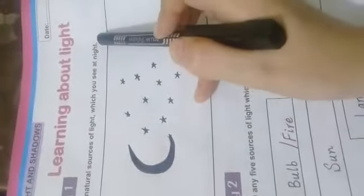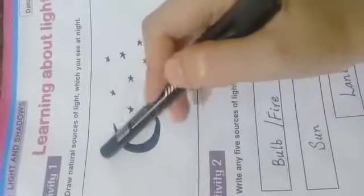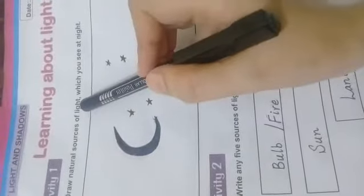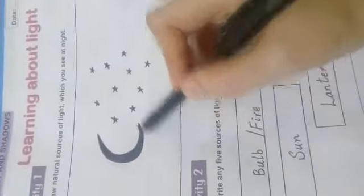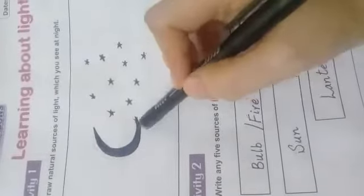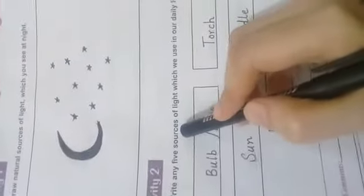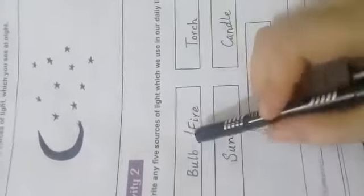Draw natural sources of light which you can see at night. Natural sources which we use in our daily life. 5 roshni kay zaraaye batayen, likhain yahan pe which we use in our daily life. Jo hum apni roz marra ki zindagi mein use karte hain, roshni ka zariya kaun kaun si cheezain? Bulb.